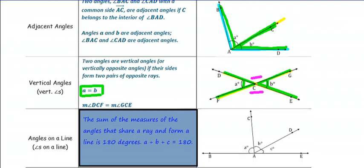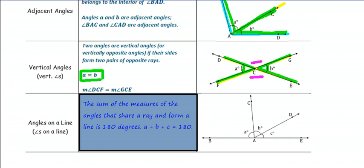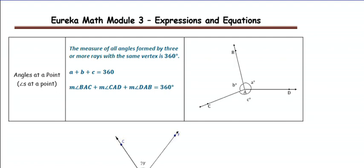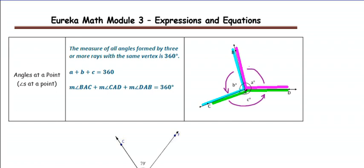Angles on a line: the sum of the measures of the angles that share a ray and form a line is 180 degrees. So A plus B plus C equals 180 degrees, and they are on a line. Angles at a point: the measure of all angles formed by three or more rays with the same vertex is 360 degrees. The vertex is point A, with Angle A, Angle B, and Angle C having a sum of 360 degrees — when you go all the way around in a circle, that is 360 degrees.